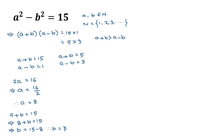For the second combination, adding a + b = 5 and a − b = 3, the b terms cancel and we get 2a = 5 + 3 = 8. Dividing both sides by 2 gives a = 8 ÷ 2 = 4.